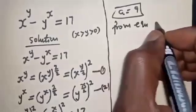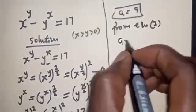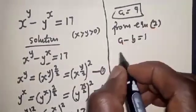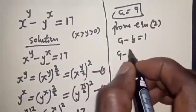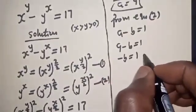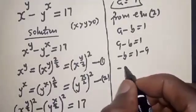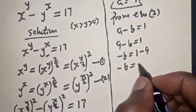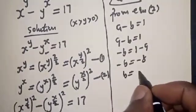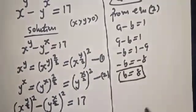From equation 4, A minus B equals 1. When A is 9, we have 9 minus B equals 1, so minus B equals 1 minus 9, which gives minus B equals minus 8. Therefore B equals 8.